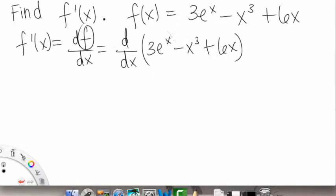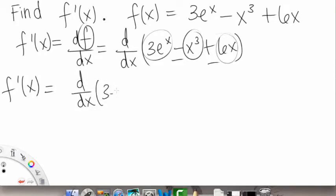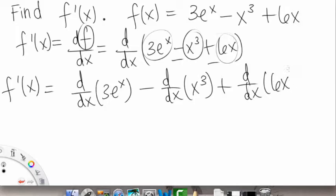All right, so let's break this up. We'll split it up into three different functions, separated by this minus sign and the plus sign here. So that's going to be the same as, so again, I'll write f prime of x is equal to d dx of 3e to the x minus d dx of x to the third plus a d dx of 6x.